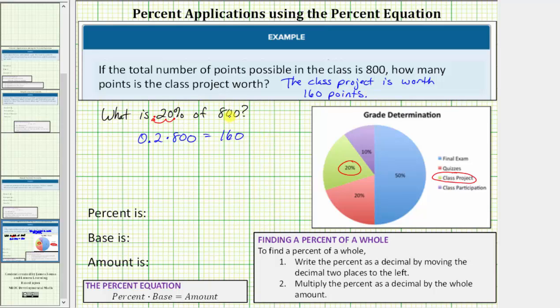We can also answer this question using the percent equation, percent times base equals amount, where we know the percent is 20%. Because the question reads, what is 20% of 800.